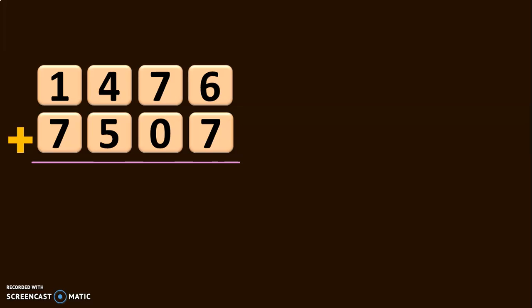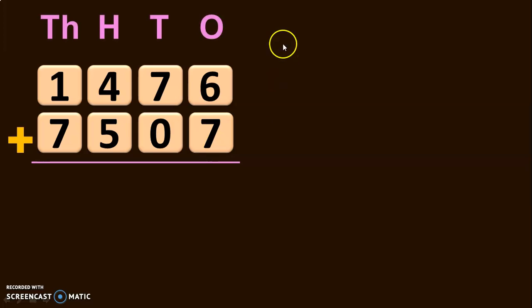Here we have 1,476 plus 7,507. To begin the addition, it is always good practice to write down the place values: Ones, Tens, Hundreds and Thousands. As we are dealing with 4-digit numbers, we will be seeing place values till thousand.